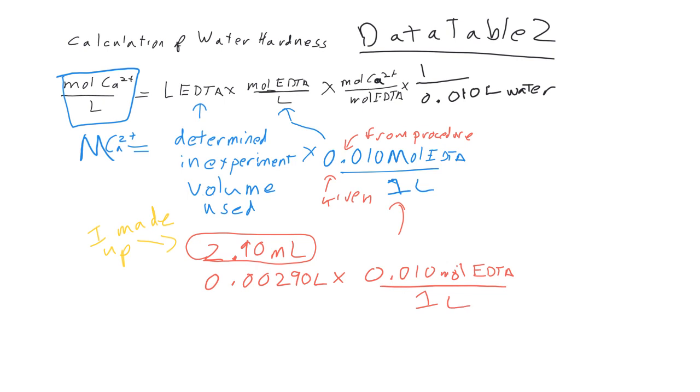The next thing that they've done here is they decided to confuse you completely. What they've done is they've switched from moles of EDTA to moles of calcium. And they're referring to the chemical reaction between the two in which they react in a one-to-one ratio. So one mole of calcium, two-plus, reacts with one mole EDTA.